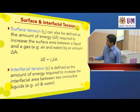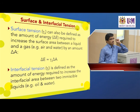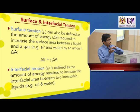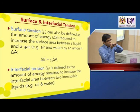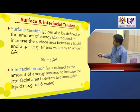When we have liquid and liquid — for example, oil and water — each liquid has its own surface tension, but when they are mixed together they form an interfacial tension. Interfacial tension is defined as the amount of energy required to increase the interfacial area between two immiscible liquids.